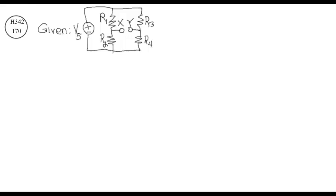This is a Thevenin-Norton conversion problem. Given a circuit with four resistors, one voltage source, and two points X and Y in the circuit, find the Thevenin equivalent circuit for X and Y, and find the Norton equivalent circuit for points X and Y.